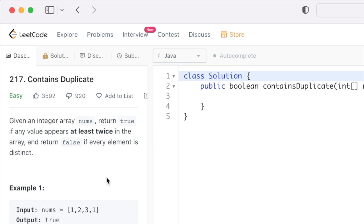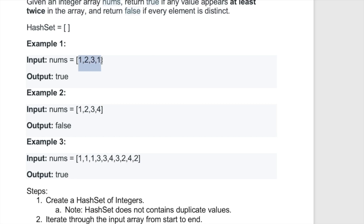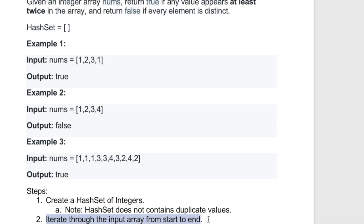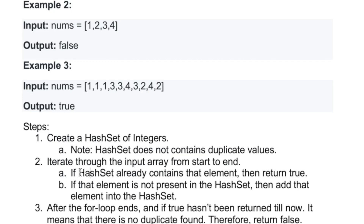Let's look at the steps to solve this problem. First, we create a hash set of integers, because a hash set does not contain duplicate values. We add one element at a time from start to end into the hash set, and once we find a duplicate element we return true. We iterate through the input array from start to end — if the hash set already contains that element, return true.